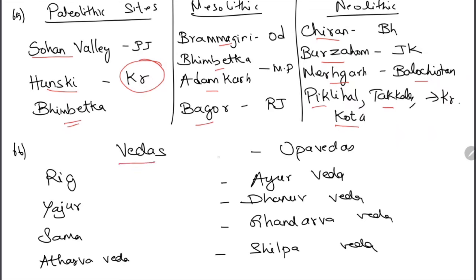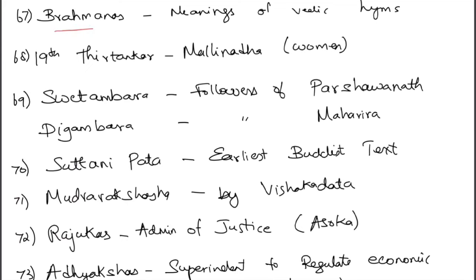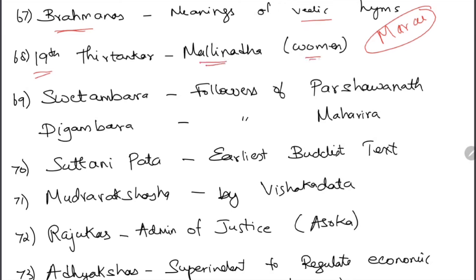More Neolithic sites: Piklihal, Takkalakota, and Kota are in Karnataka. Now Upavedas: the Upaveda of Rigveda is Ayurveda; of Yajurveda is Dhanurveda; of Samaveda is Gandharva Veda; of Atharvaveda is Shilpa Veda. Brahmanas were written as meanings or explanations of Vedic hymns — like summaries, because the Vedas give hidden information.